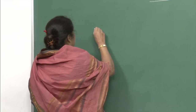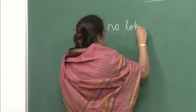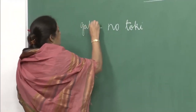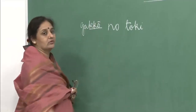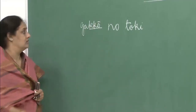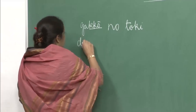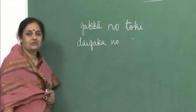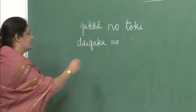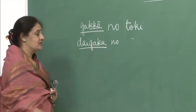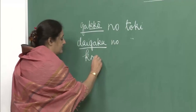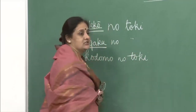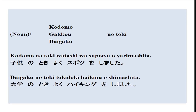The first one is noun no toki. Toki means 'at that time'. For example: gakkou no toki — when I was in school. Daigaku no toki — when I was at university. Kodomo no toki — when I was a child. You can use toki like this very freely.